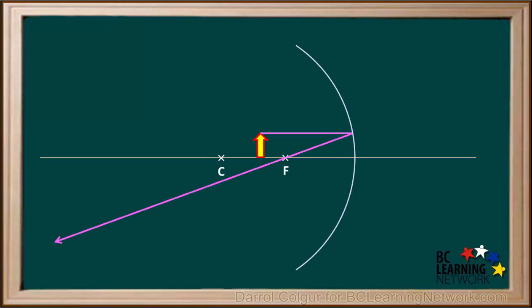Next we draw a straight line between the top of the object and the center of curvature, and we extend it up to the surface of the mirror and down past the point of intersection with the purple line.